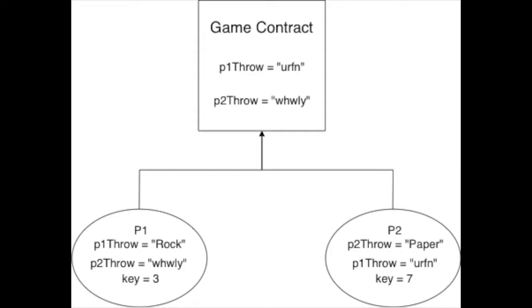Next, each player can go onto the game contract and read what their opponent has written down for their throw. When they read this throw, they know that the opponent has committed this as an answer to the game contract. With this commitment, they know that the opponent cannot read their own answer because it's encrypted, and because they have committed their own answer that will be revealed in the next stage, they can be assured that their opponent will not change their answer once they find out the results of the game.